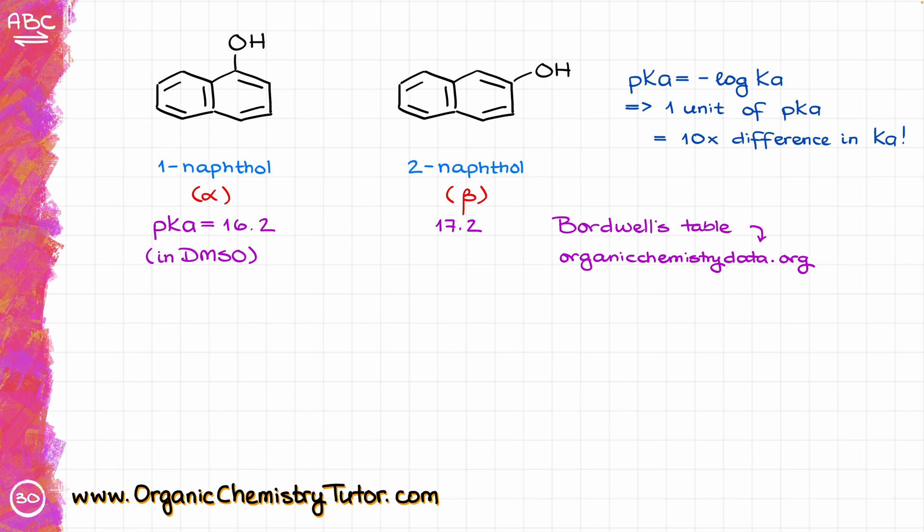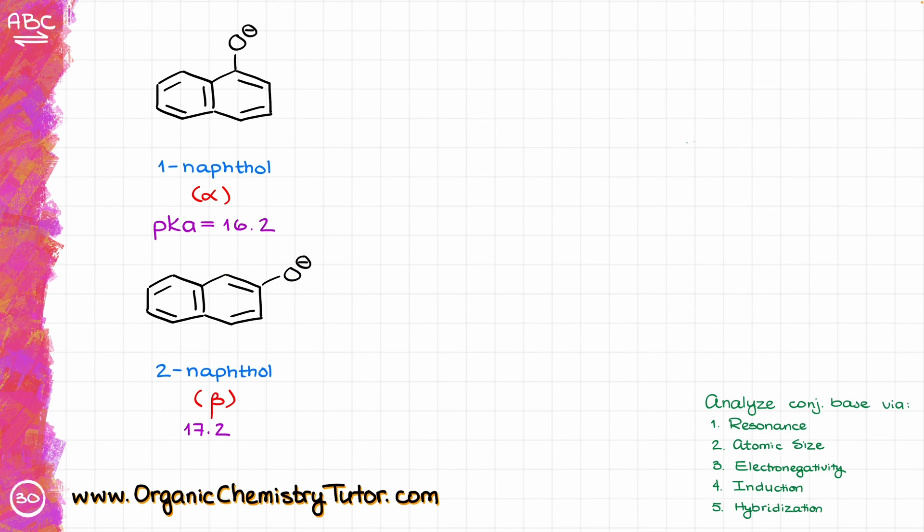Well, to answer that, we'll need to do our usual factor analysis where we rip off the acidic proton from our molecule and look at the differences in the resonance, atomic size, electronegativity, the induction effects, and finally hybridization. So, first thing first, let's draw our conjugate bases. Here we go.